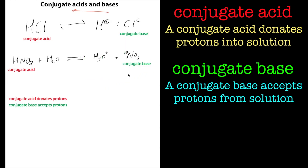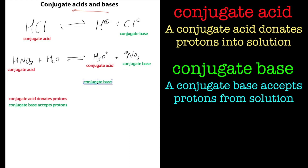Now, if we look at what's happening with water — we've got a proton source. If we look at it going backwards in this direction, we've now got a conjugate acid here. H₃O⁺ is something that donates protons, and it donates protons to this species here, so that's a conjugate acid. And if we look at the other conjugate base, you'll see that water is actually a conjugate base.